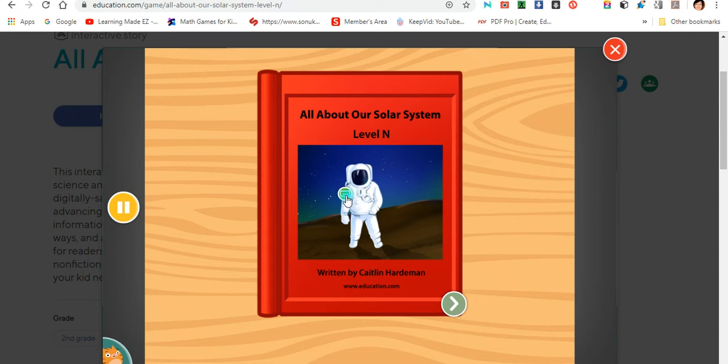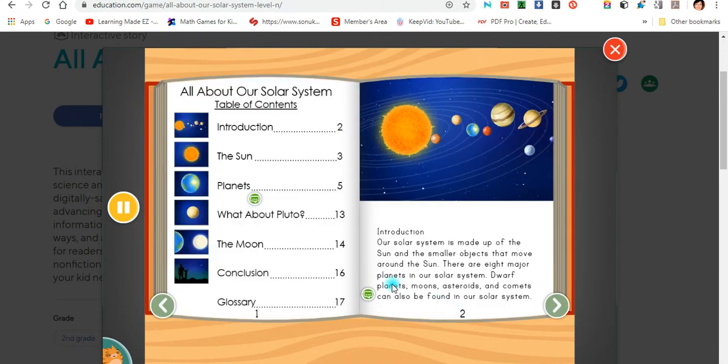All About Our Solar System, written by Caitlin Hardiman. Introduction. Our solar system is made up of the sun and the smaller objects that move around the sun. There are eight major planets in our solar system. Dwarf planets, moons, asteroids, and comets can also be found in our solar system.